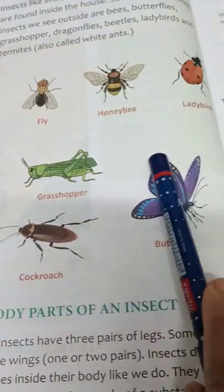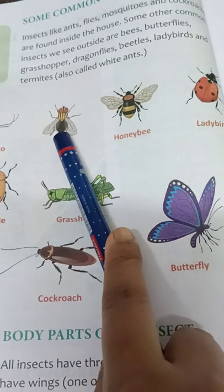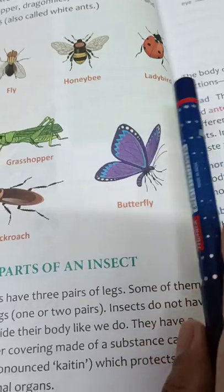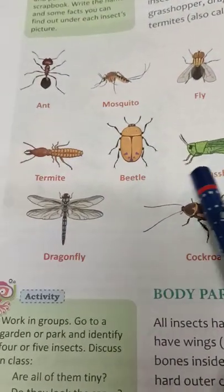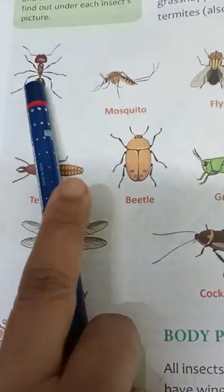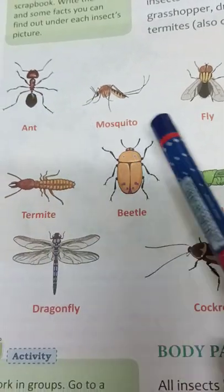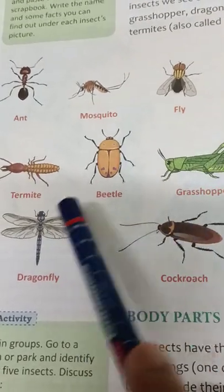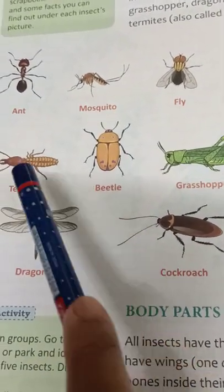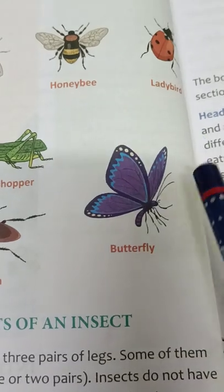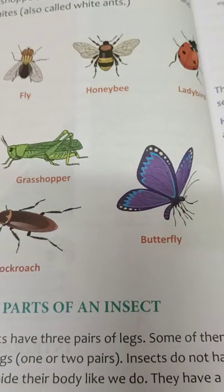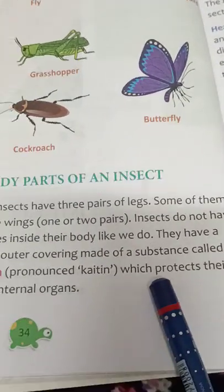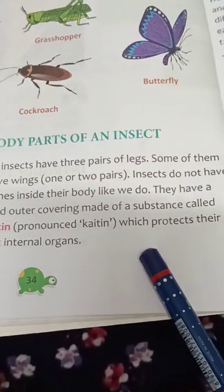So what we find in our house includes cockroaches, flies, mosquitoes, and ants. Outside we can find beetles, grasshoppers, dragonflies, termites, butterflies, ladybirds, and honeybees. Next we will see about the body parts of an insect.